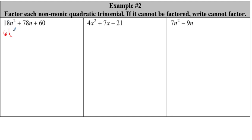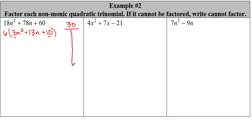So this changes to 3n² + 13n + 10 — because 78 divided by 6 is 13, and 60 divided by 6 is 10. That 6 sits on the outside. Now we do our A times C: 3 times 10 gives me 30. I'm looking for factors that add up to 13. 1 and 30, 3 and 10 — and 3 plus 10 equals 13. That's exactly what I'm looking for.